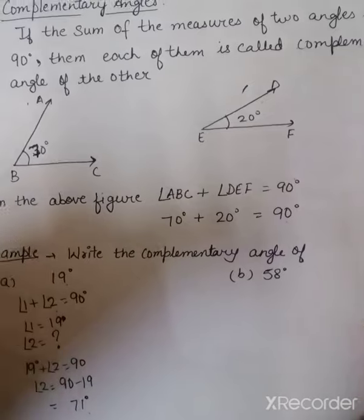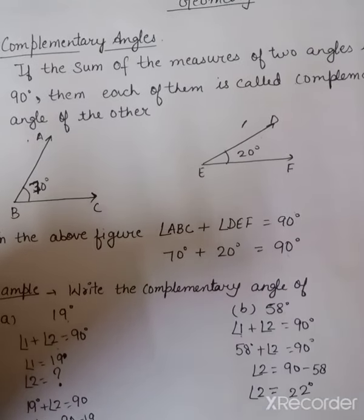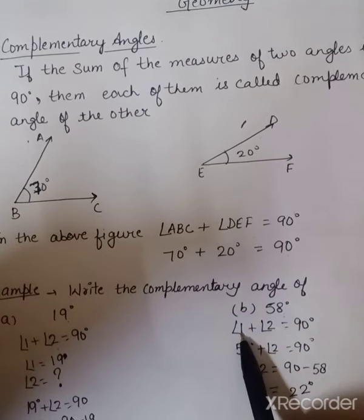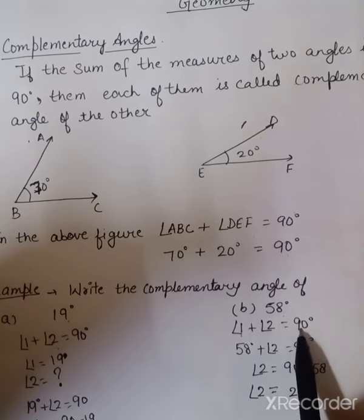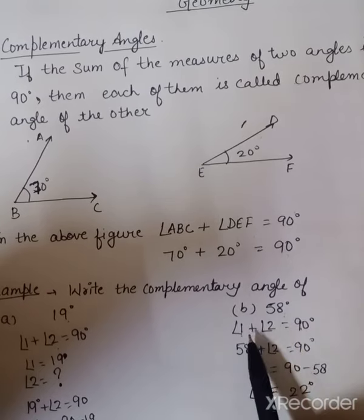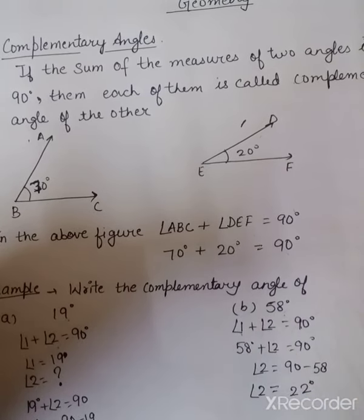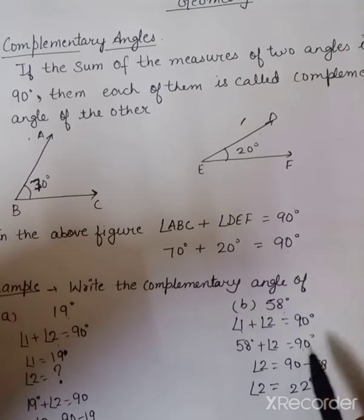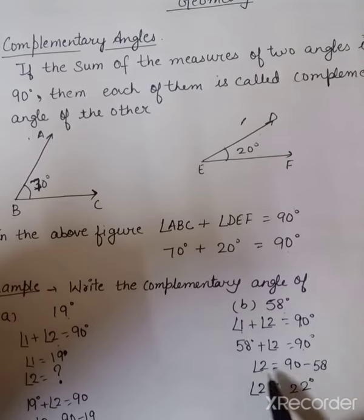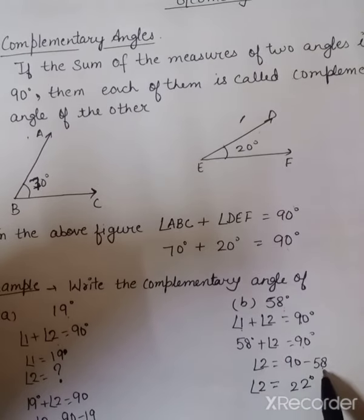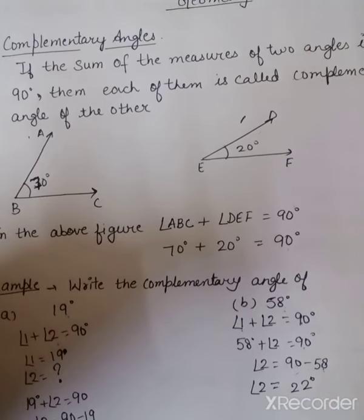Now we will write the complementary angle of 58 degrees. Angle 1 plus angle 2 should be 90 degrees. We know angle 1 is 58 degrees. We don't know angle 2. To find angle 2, we will deduct 58 from 90. So angle 2 should be 22 degrees.